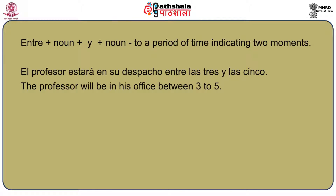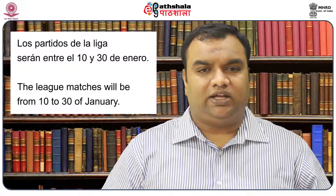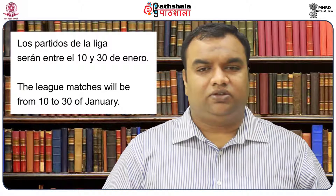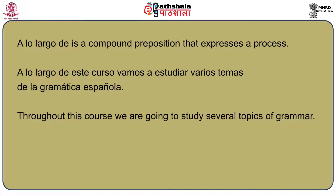The preposition entre — in the format 'entre + noun + e + noun' — refers to a period of time indicating two moments. 'El profesor estará en su despacho entre las tres y las cinco.' The professor will be in his office between 3 and 5. 'Los partidos de la liga serán entre el 10 y 30 de enero.' The league matches will be from the 10th to the 30th of January. 'A lo largo de este curso vamos a estudiar varios temas de la gramática española.' Throughout this course, we are going to study several topics of Spanish grammar.